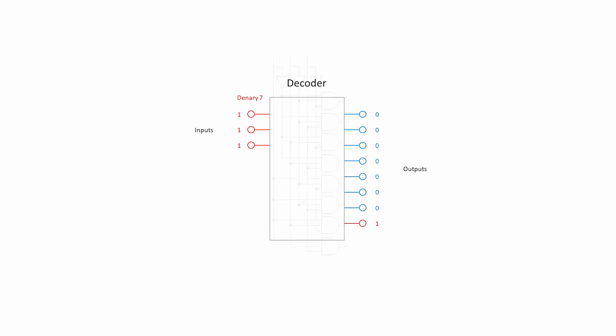A decoder can be built using combinational logic. This three to eight decoder is constructed from three NOT gates and eight AND gates.